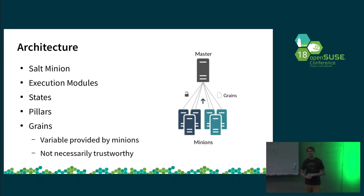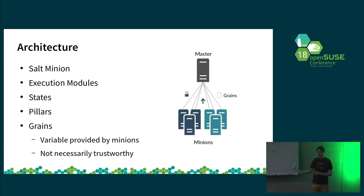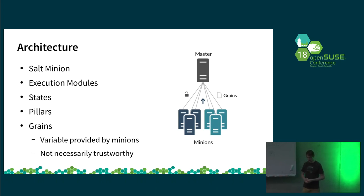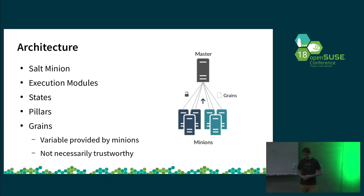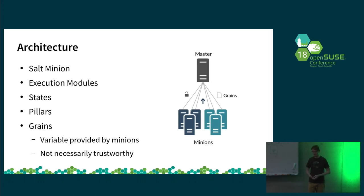When you want data from the minion to get to the Salt master, you use grains. Grains are, for example, hardware-specific details. When the minion is registered, it sends its CPU architecture, how much memory it has, IP addresses, and so on — and sends it back to the master so you can evaluate them later. You can see what machines have any characteristics or hardware details. Because the minion can change grains, you may or may not trust them — they can be fabricated.